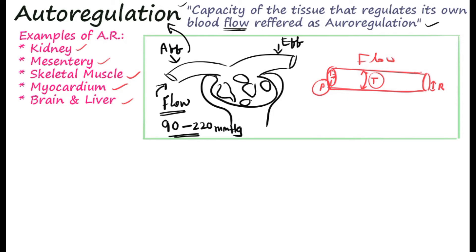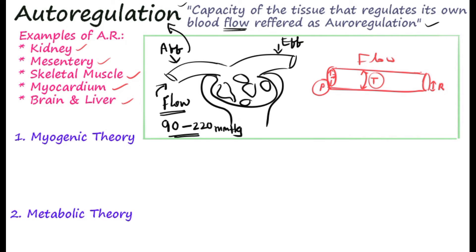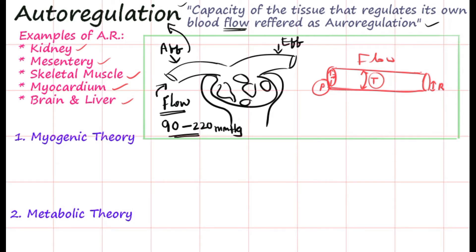There are two basic theories proposed by scientists to maintain autoregulation in blood vessels despite fluctuations in blood pressure. The first is the myogenic theory and the second is the metabolic theory.